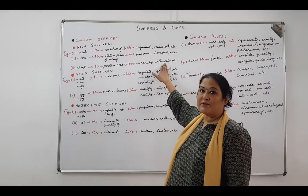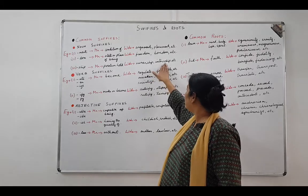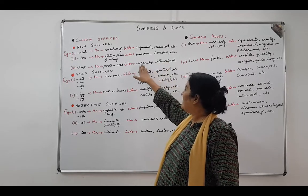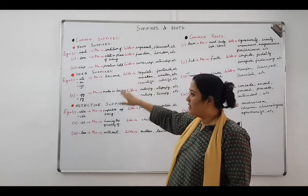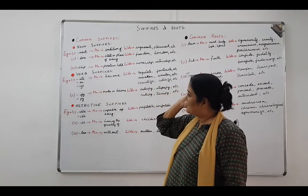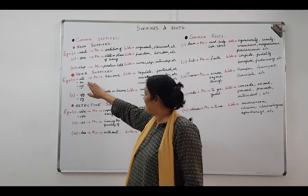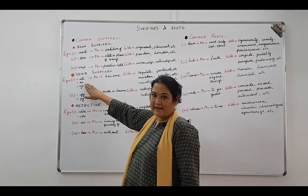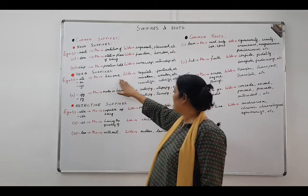Internship is the position that an intern holds, and ownership is the position that the owner holds. Now we come to the verb suffixes. In the verb suffixes, the first example that I have is a-t-e, e-n, i-z-e.